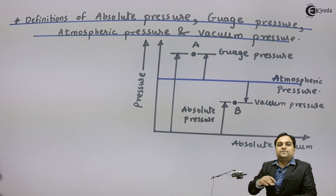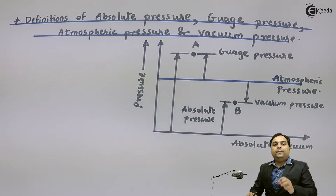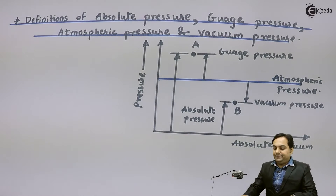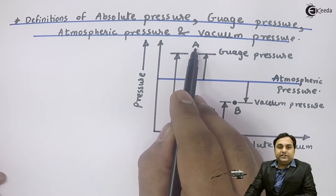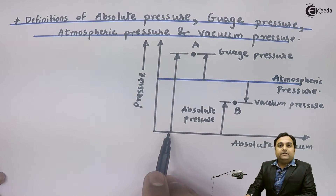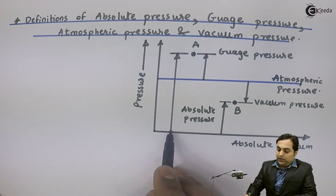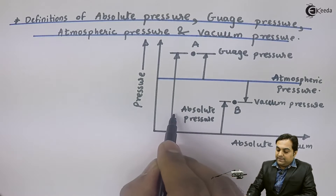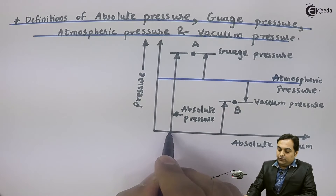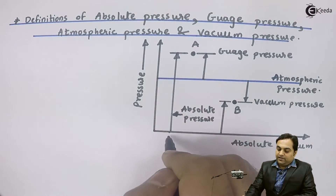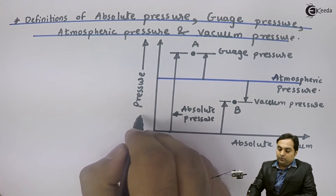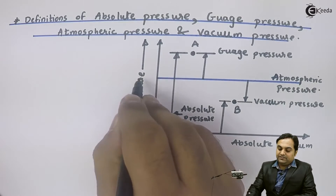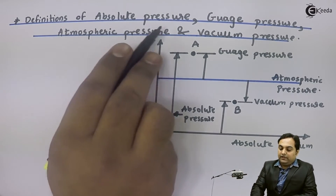Absolute vacuum is a complete vacuum — no pressure is exerted there. Suppose I am taking point A. At point A, if I am marking the pressure from absolute vacuum, that would be called absolute pressure. As we can see in this diagram, from the absolute vacuum up to point A, the pressure value read on the vertical axis becomes my absolute pressure.